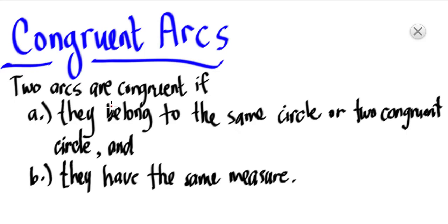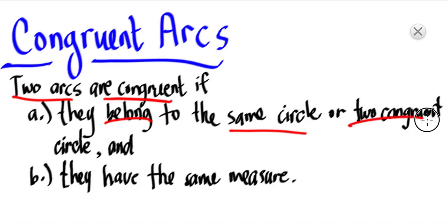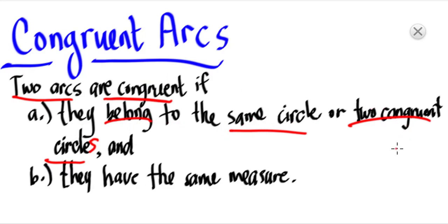Consider the following definition. Two arcs are said to be congruent if: number one, they belong to the same circle or two congruent circles — the two circles must be congruent or it must be the same circle — and number two, they have the same measure.